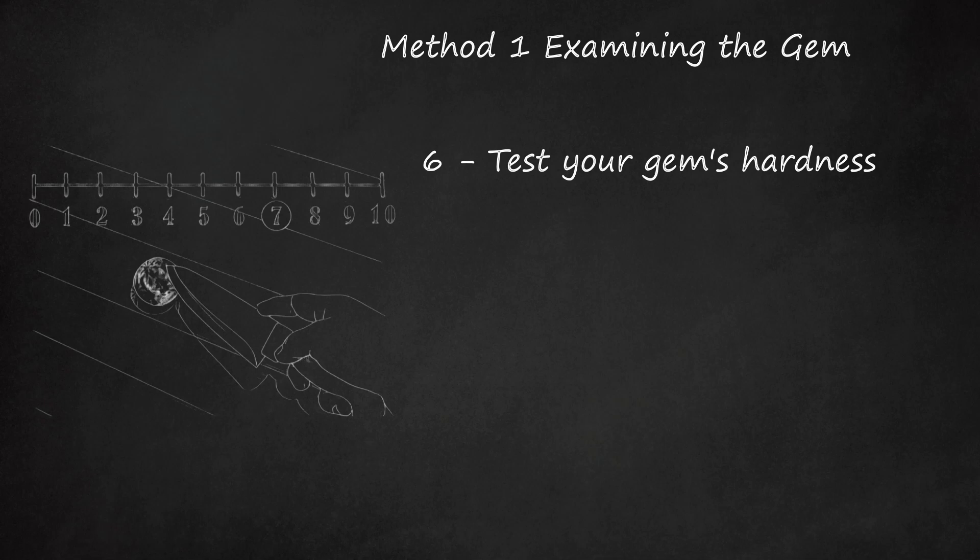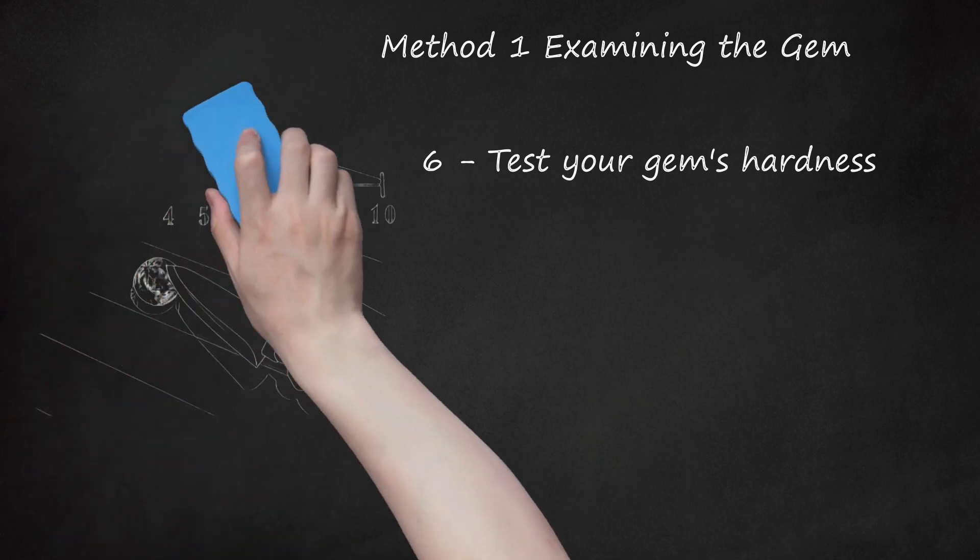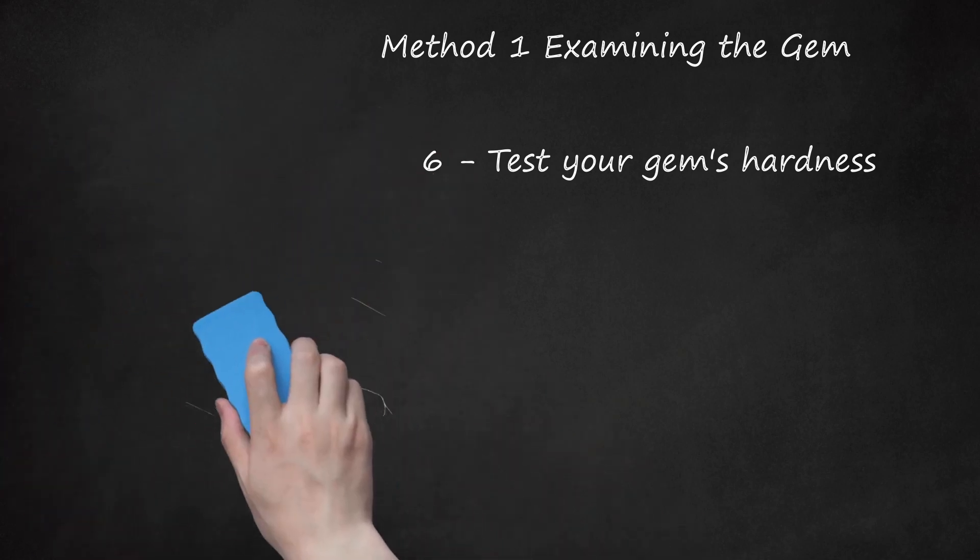A fingernail has a hardness of 2. A knife blade is a 5. A steel blade is a 6.5. Try to gently scratch your amethyst with your fingernail or a knife blade. You can scratch it against an object with a steel blade, like an expensive knife or axe, if you can find one. Your amethyst should be scratch-resistant to these objects. If it is not, it may not be authentic.